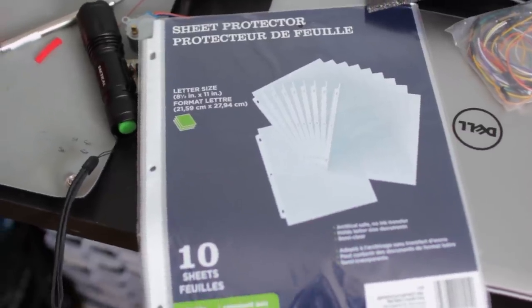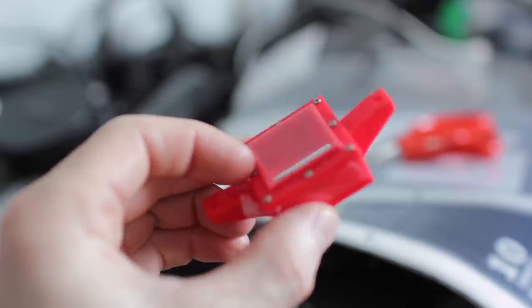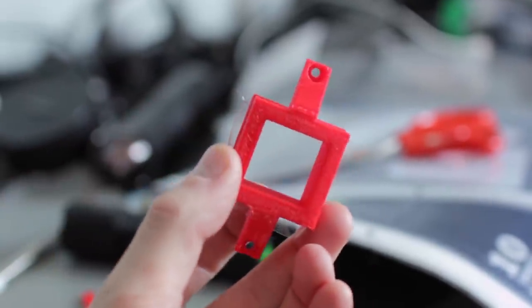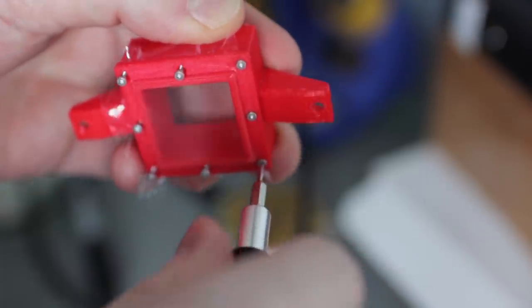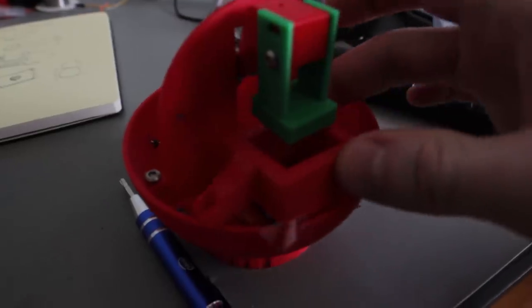Now in order to make this basin that holds the liquid resin, you need to have a clear bottom. So what I did was I took some sheet protectors for paper, I cut out a small square, and these are two pieces of 3D printed parts that sandwich that piece of plastic between them in such a way that it makes it tight, so that you get a nice smooth plastic image on the LCD.